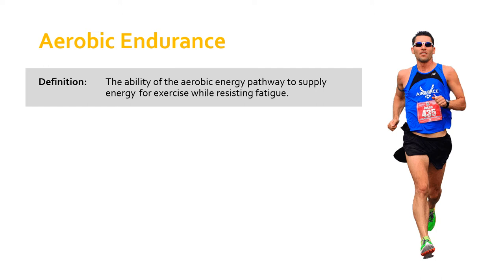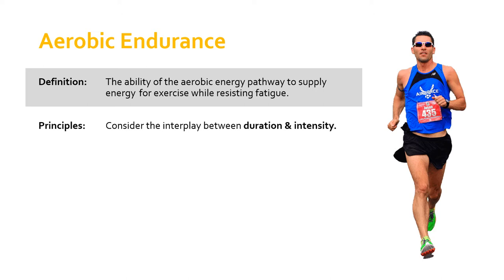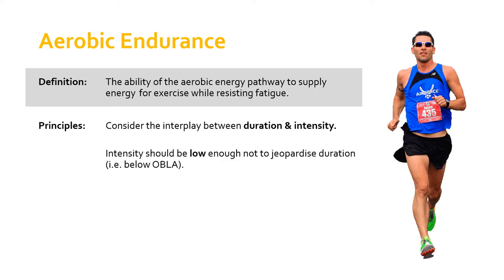What are the key principles when it comes to doing this? As with any exercise and training, we need to carefully consider the interplay between the duration of the exercise and the intensity of the exercise. As the intensity goes up — heading towards 100%, whether it's sprinting or whatever — the duration has to come down. Those two things interplay against one another. For aerobic endurance, the intensity needs to be high enough to create adaptations, but also low enough...